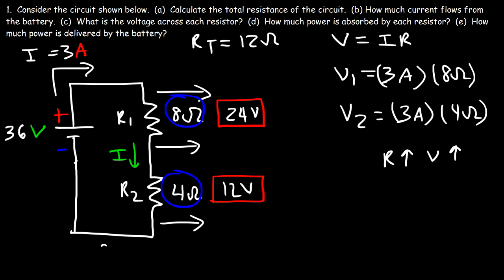If the electric potential at this point is 0, at the next point it's going to be 12 volts, and at the next point it's 36. The charges at that higher-potential point have more energy than at the lower-potential point. What a resistor does is consume electrical energy from the charges — as a charge flows through a resistor it loses energy, and the resistor absorbs that energy and converts it into heat.